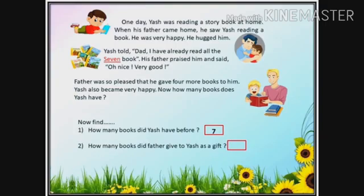Question number two: how many books did father give to Yesh as a gift? The answer is four, because when his father heard that Yesh had already read seven books, he gave him four more books as a gift. So the answer is four.